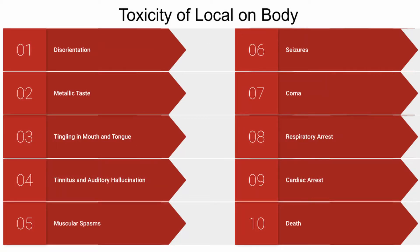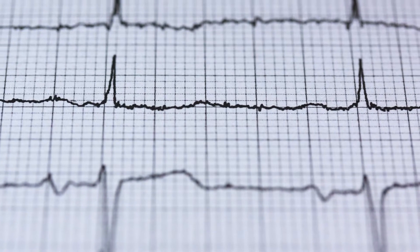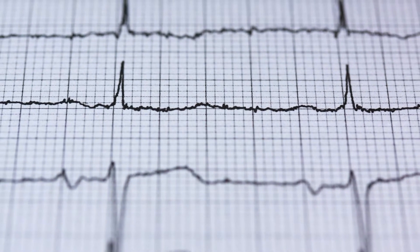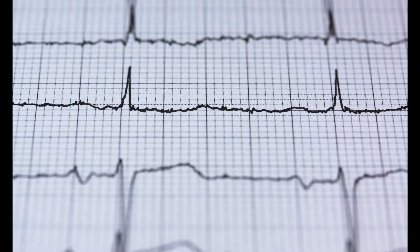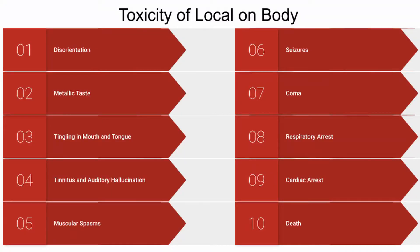Toxicity of local anesthetic first has its effect on the CNS and then moves into the cardiovascular system. We first see symptoms like disorientation, metallic taste, tingling in the mouth, tinnitus, or muscle spasms, then seizures, coma, and following that, respiratory arrest, cardiac arrest, and ultimately the potential for death, although this is very uncommon.